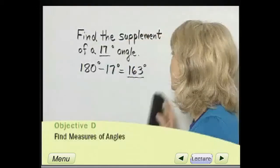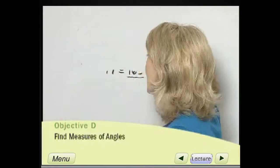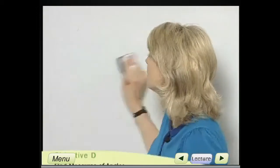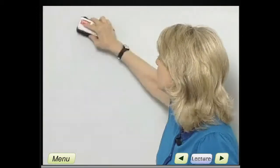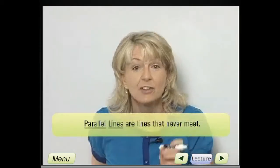We're going to talk about different ways that lines can relate. Lines can be parallel or lines can be intersecting. And what do we mean by parallel lines? Parallel lines are two lines that never meet.